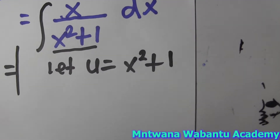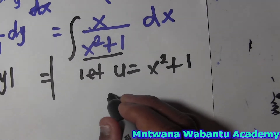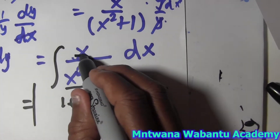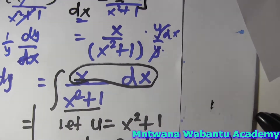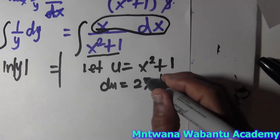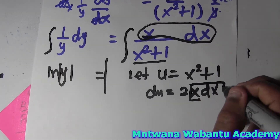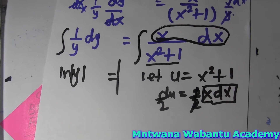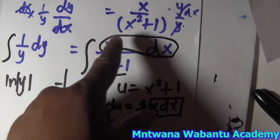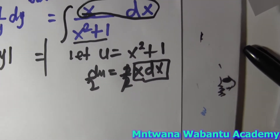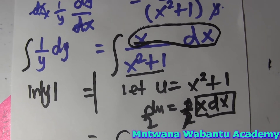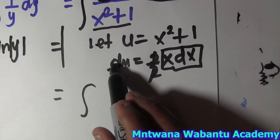For the right-hand side, let u = x² + 1. If you differentiate that you get du = 2x dx. When you differentiate and you want to get x dx, then x dx equals du/2. So on the right-hand side, x dx becomes du/2, and the denominator x² + 1 becomes u.